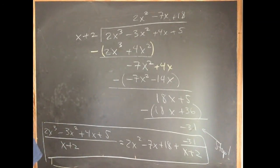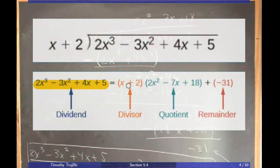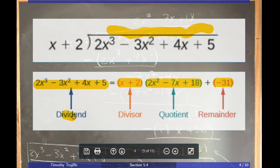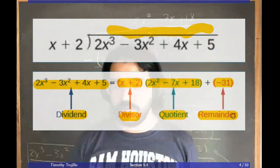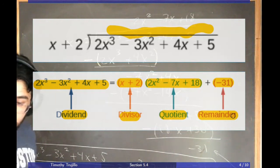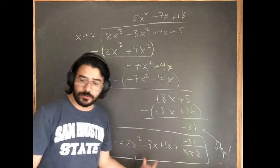We can also write this in a non-fraction form by multiplying both sides by (x+2): 2x³ − 3x² + 4x + 5 = (2x² − 7x + 18)(x+2) + (−31). This is the division algorithm form: dividend = quotient × divisor + remainder. The homework platform will ask about these specific terms, so learn them: dividend, divisor, quotient, remainder.